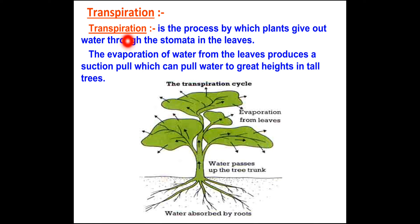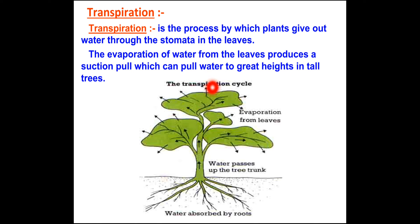Now, transpiration. Transportation and transpiration are different. Transpiration is also a process — in this process, the plant gives out water through the stomata in the leaves. In the plant body, when water is in excess amount, that water is given out through the stomata. On the leaves there are small pore-like structures called stomata, and the plant can give out water through them. This process is called transpiration.